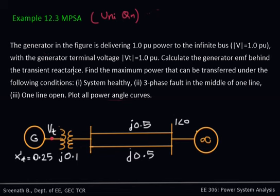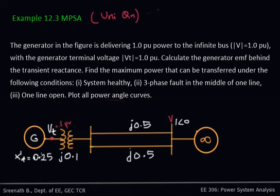The question goes like this: a generator as given in the figure is delivering one per unit of power to the infinite bus. The infinite bus voltage V is given as one per unit. The generator terminal voltage Vt is also one per unit. You have to calculate the generated EMF E behind the transient reactance X'd.